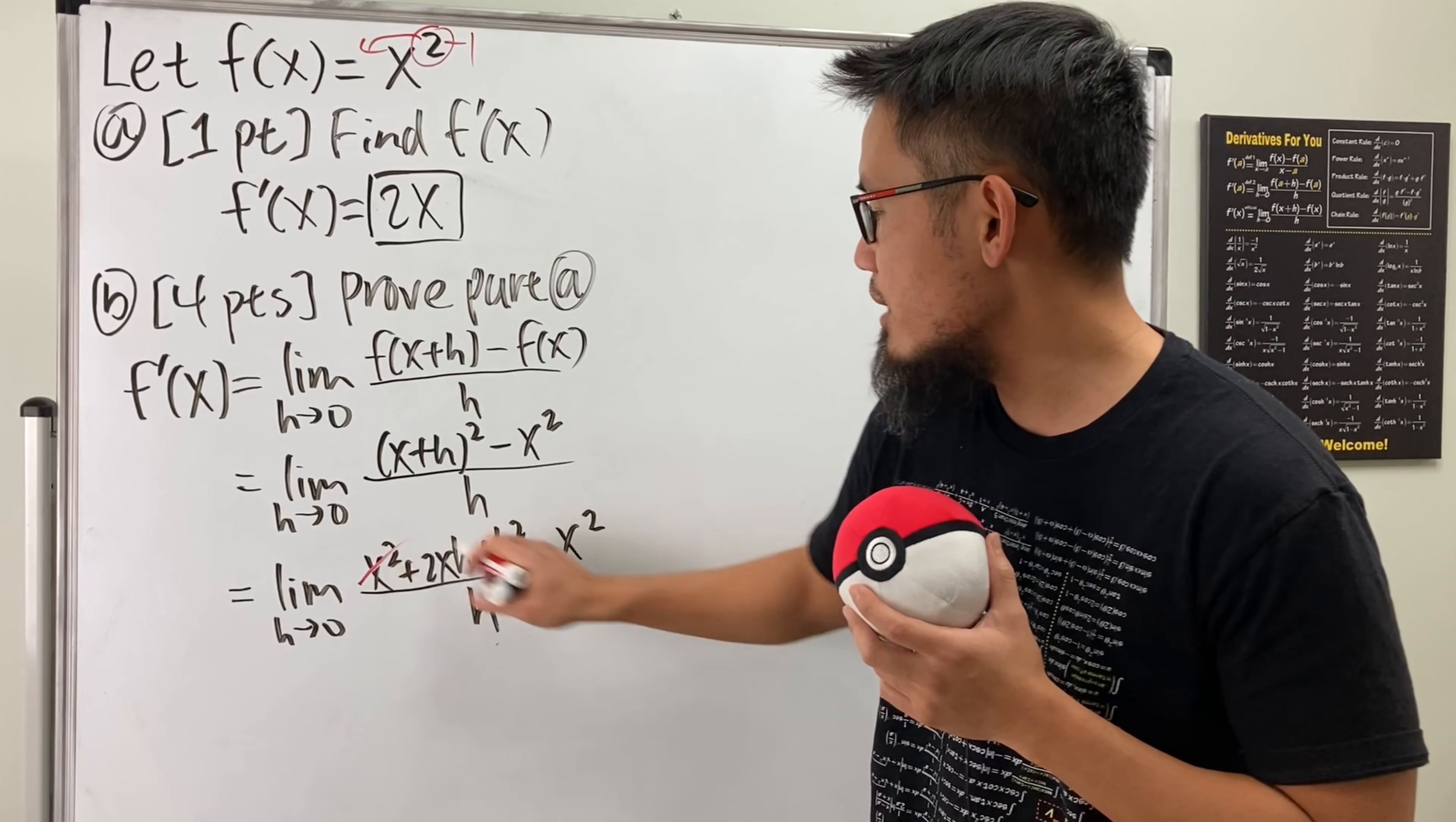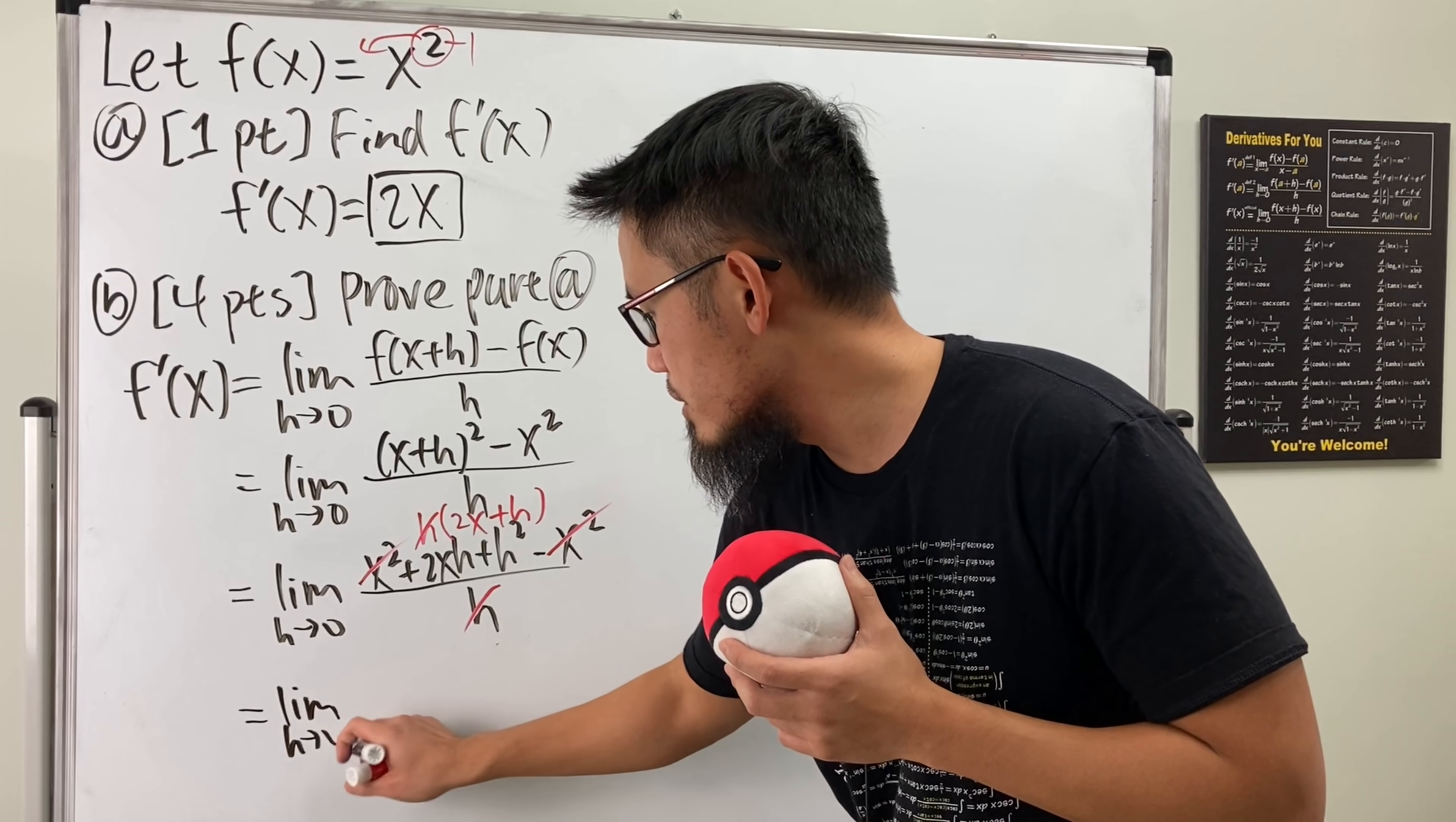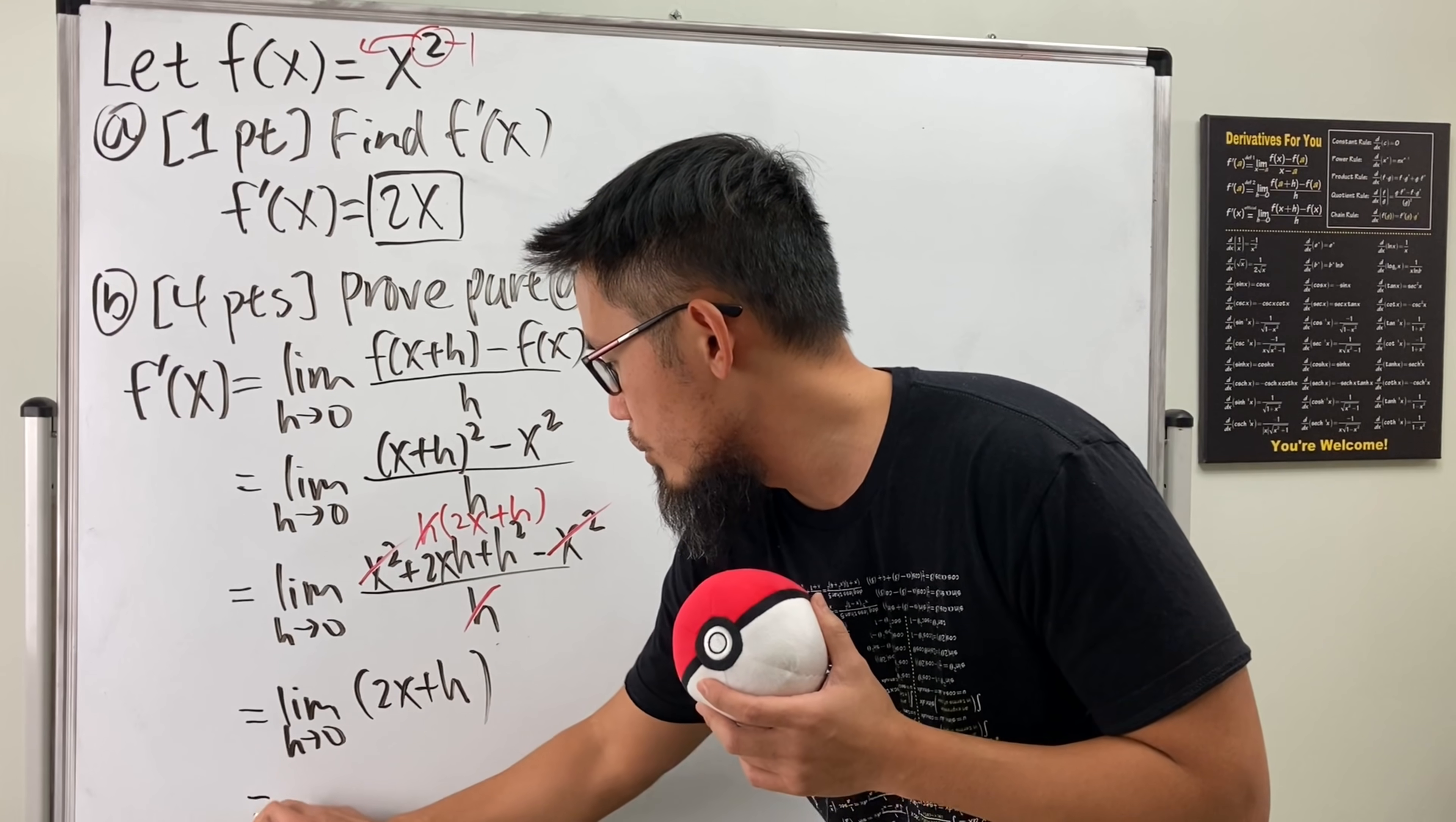Well, we see a nice cancellation. This and that cancel, and we can also factor out the h. So go ahead and do that. And we get 2x right here, and then plus h. This h and that h cancel, which is very nice, and then we get the limit as h approaching 0. And now we just have 2x plus h. But because h is approaching 0, you put it here, which is just 2x plus 0, which is just 2x.